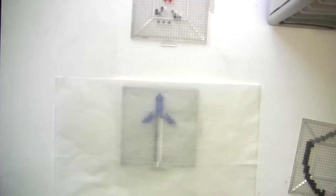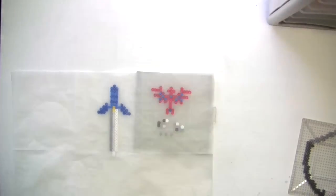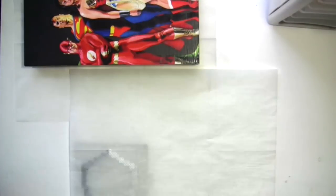Heat up that iron and get to work fusing your pieces. Iron both sides for extra sturdiness and put some heavy books on top of them while they cool.